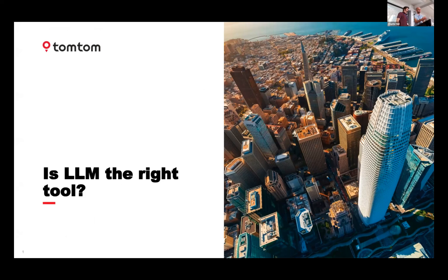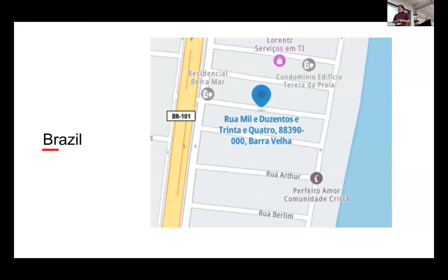Next we have Artem from TomTom on the question: is LLM the right tool? We're living in exciting times of large language models. Let's see an example from analysis of failed sessions. In Brazil, there are streets which look like this: 'Rua mil e duzentos e trinta e quattro' — meaning Street 1,234.